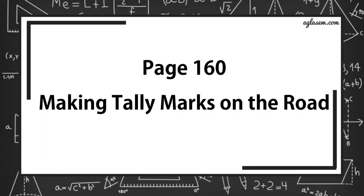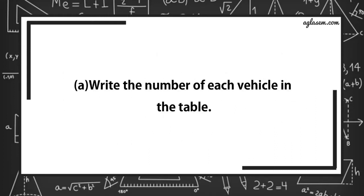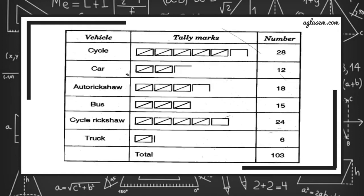Now, turn to page number 160, Making tally marks on the road. Sumita stood on the road for half an hour and counted the number of vehicles passing by. She made a tally mark for each vehicle. This helped her in counting the total number of vehicles in each group. Write the number of each vehicle in the table. Number of cycle we have 28, car 12, auto rickshaw 18, bus 15, cycle rickshaw 24, and truck 6. So, total is 103.